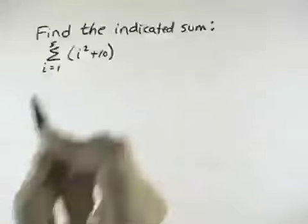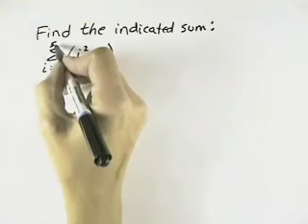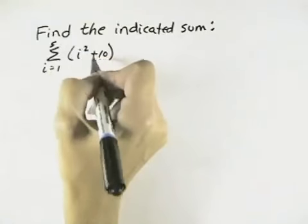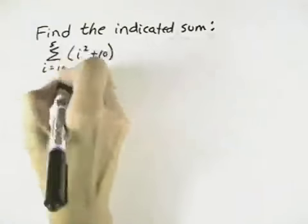We want to find the indicated sum, where the sum is from i equals 1 to 5, of the quantity i squared plus 10. That means find the first five terms.